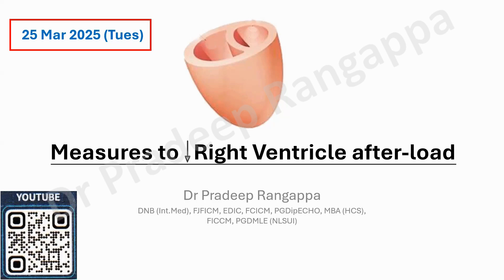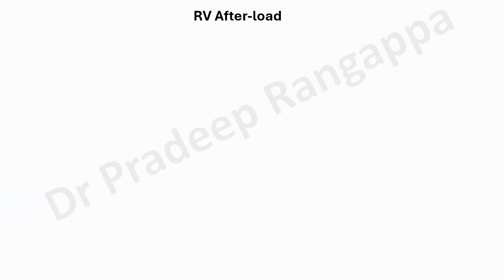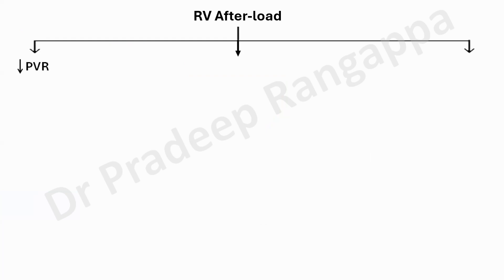How would you answer these questions? This is something we see day in and day out in our ICUs. When we ask how do we reduce RV afterload, we have to categorize into three important components: measures to reduce pulmonary vascular resistance, measures to reduce pulmonary artery pressure, and measures to improve RV contractility. This is the right way of approach.